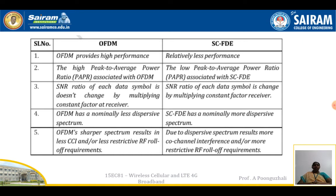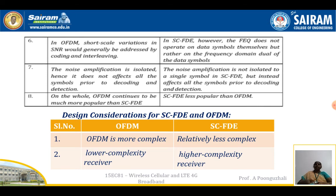In OFDM, short-scale variations in signal-to-noise ratio are addressed by coding and interleaving. In single carrier FDE, the frequency equalizer does not operate on the data symbols themselves but rather on the frequency domain representation of the data symbols. Noise amplification is isolated in OFDM and does not affect all symbols prior to decoding and detection, whereas in SC-FDE, noise amplification is not isolated to a single symbol but affects all symbols prior to decoding and detection. Overall, OFDM continues to be more popular than single carrier FDE.